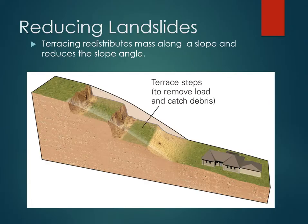Terracing is a really common technique — it's what was done on the 1987 landslide. Terrace steps redistribute the mass along the slope and tend to reduce the overall angle, so terracing can be pretty important in reducing landslide risk.